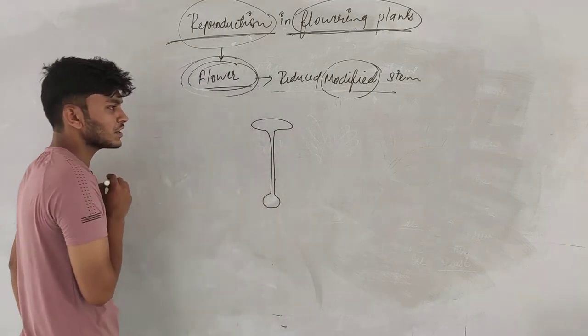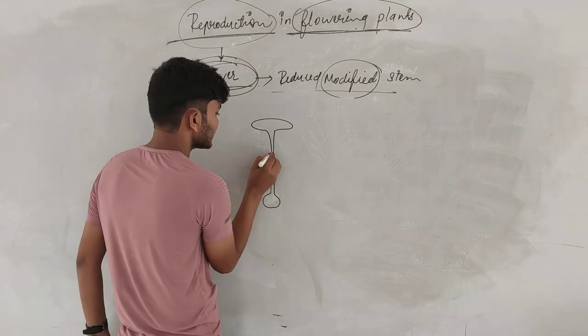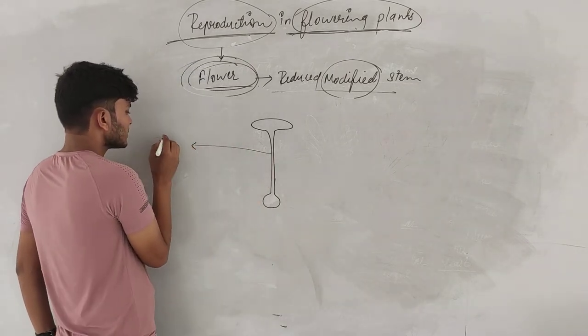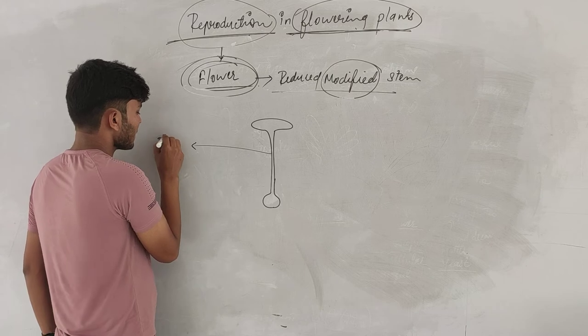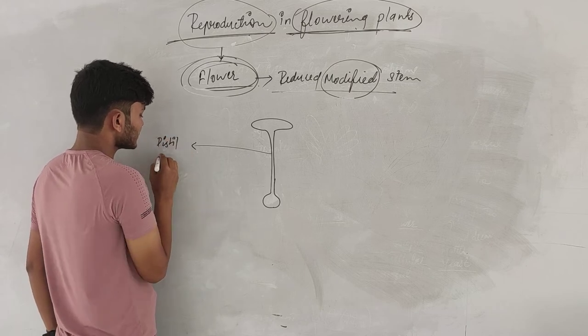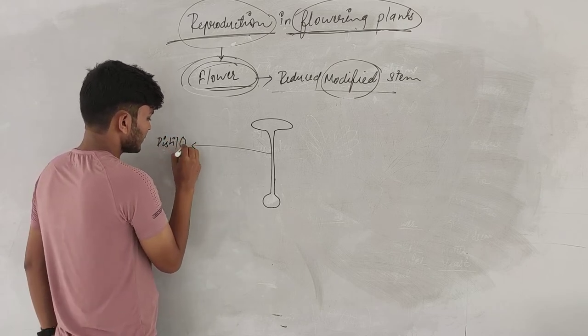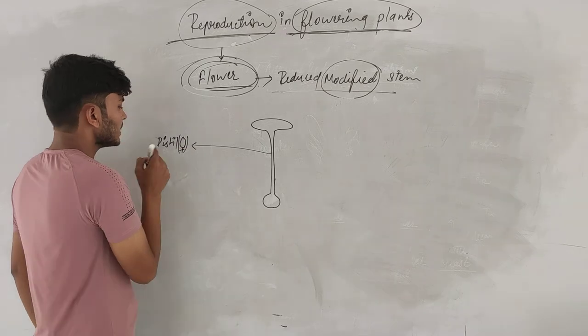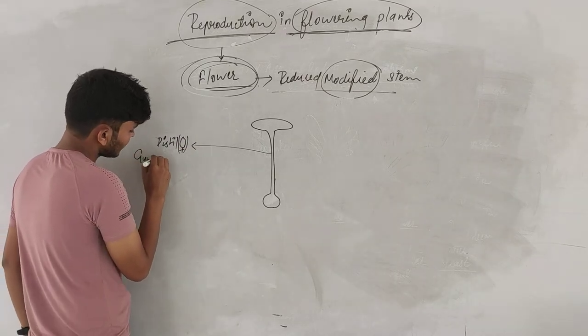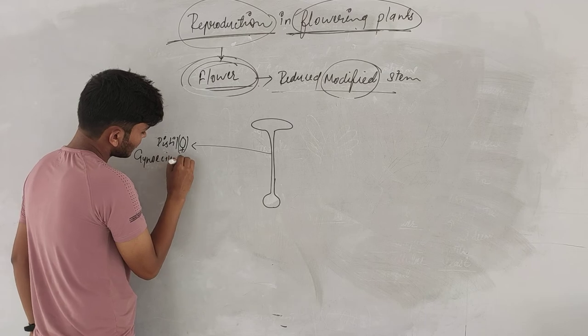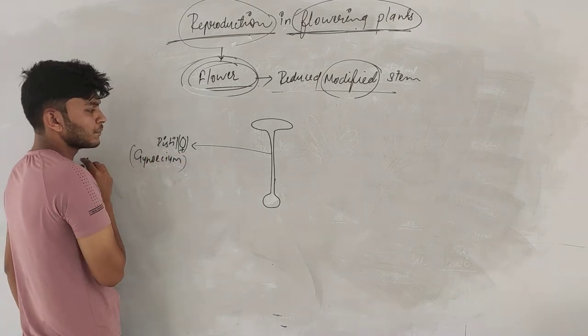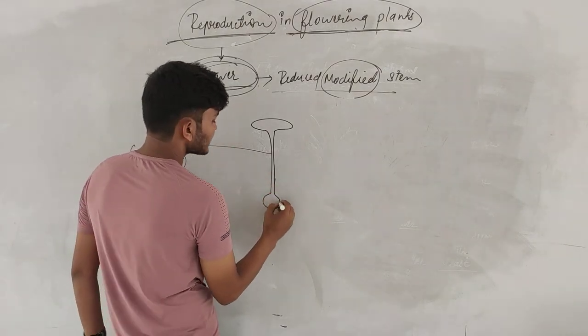The innermost whorl is known as pistil. This is female part. How is this part? Female, which is called gynoecium. Gynoecium.